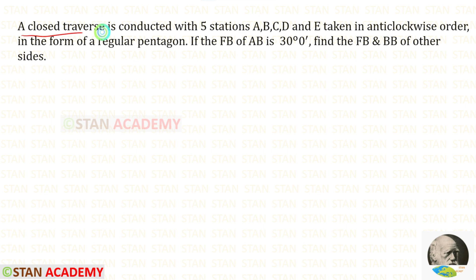A closed traverse is conducted with five stations A, B, C, D and E taken in anticlockwise order in the form of a regular pentagon. If the forebearing of AB is 30 degrees, find the forebearing and backbearing of other sides.